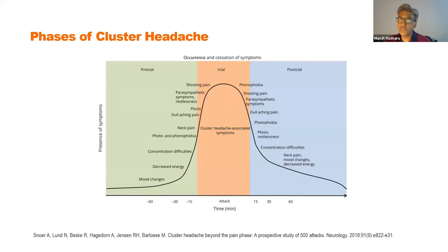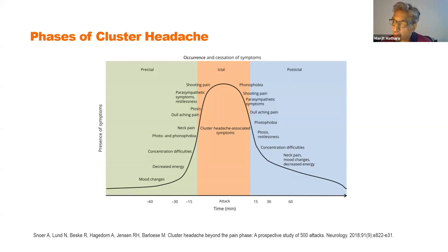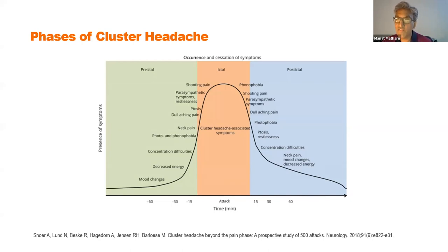One exciting study from Danish colleagues prospectively looked at 500 attacks and identified pre-ictal symptoms — before the attack, patients experience mood changes, decreased energy, difficulty concentrating, and photo/phonophobia. Then comes the attack proper, followed by a post-ictal phase lasting several hours with residual restlessness, difficulty concentrating, and neck changes. This is very similar to migraine, which also has distinct phases.